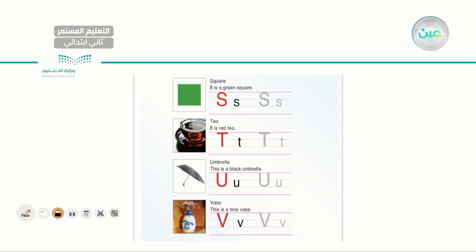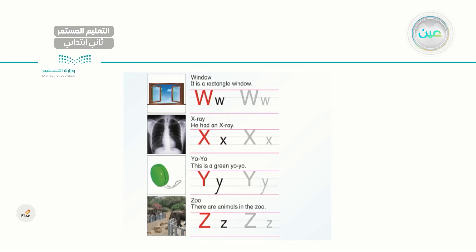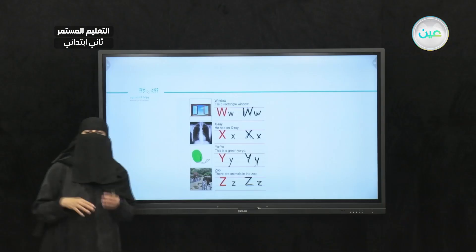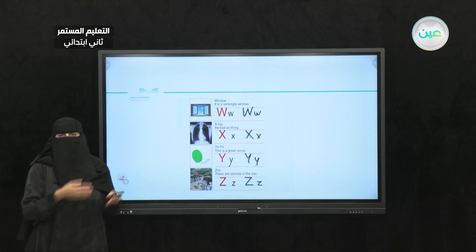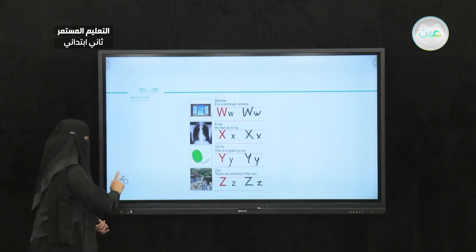Let's go to the last set of letters. I have W — the sound is WA, the word is window. Next one is X. Capital X and small x. We are tracing now. X-ray. Next letter is Y — capital and small — the word is yellow. The last letter in the English alphabet is letter Z. Capital Z and small z. The word is zoo. So we've gone through all the English alphabet from A to Z.